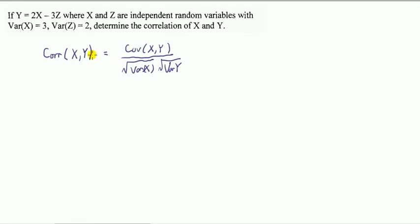So we start by writing down the definition of the correlation. It's the covariance between the two divided by the product of the standard deviations. Standard deviations for each variable being the positive square root of the variance.